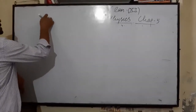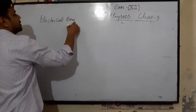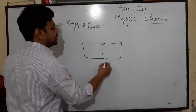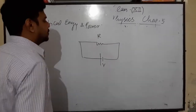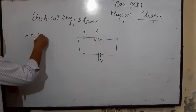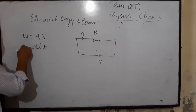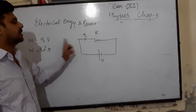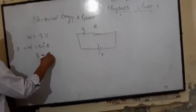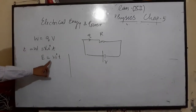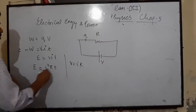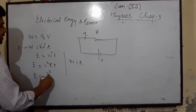Now another topic: electrical energy, or power spent by a battery. Consider a resistor connected to a battery of potential difference V. The work done by the battery in flowing charge Q through this resistor is W = QV. Since Q = IT, we get W = VIT. This is also called electrical energy of the circuit. Using V = IR, we can also write E = I²RT or E = V²T/R.